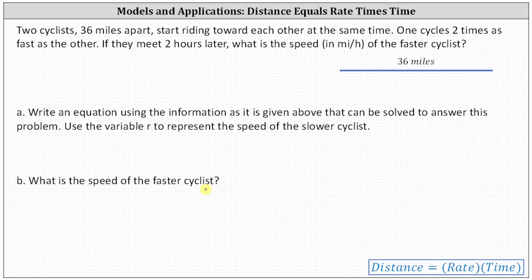To begin, we need to remember that distance equals rate times time. In this case though, we'll have two products of rate and time, one for the slower cyclist and one for the faster cyclist. And because the two cyclists are riding toward each other, we'll be adding the two products.